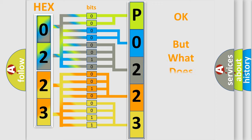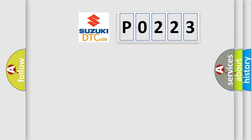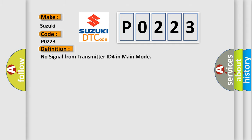The number itself does not make sense to us if we cannot assign information about what it actually expresses. So, what does the diagnostic trouble code P0223 interpret specifically for Suzuki car manufacturers? The basic definition is: No signal from transmitter ID4 in main mode.